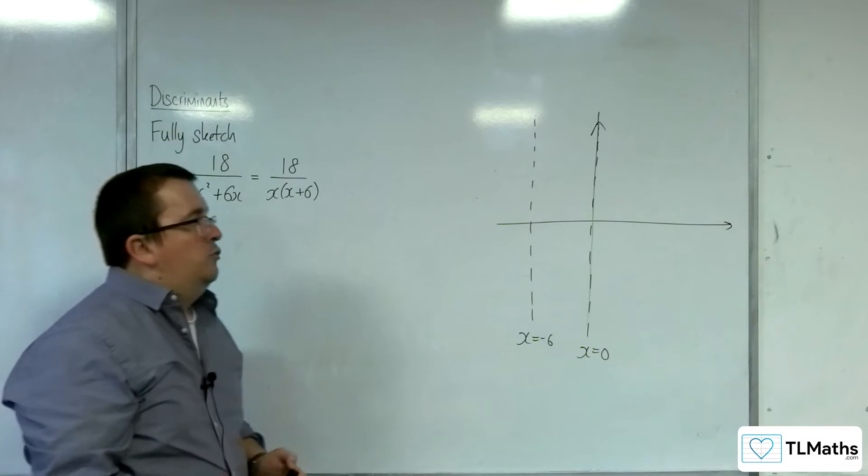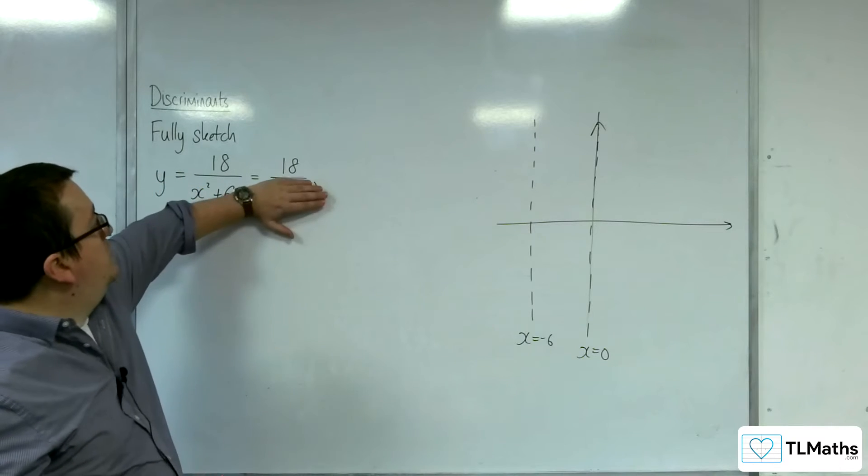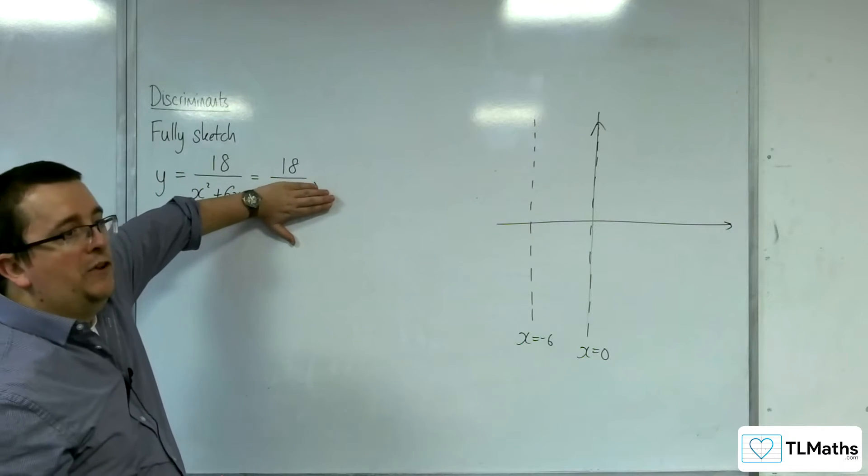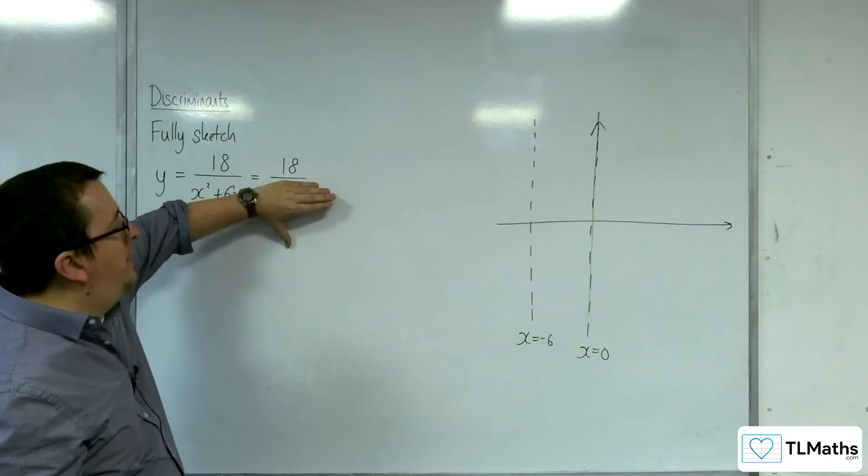Next up, where is it crossing the x-axis? That's when y is 0, when the numerator is 0. Well, 18 can't be 0, so it doesn't cross the x-axis.